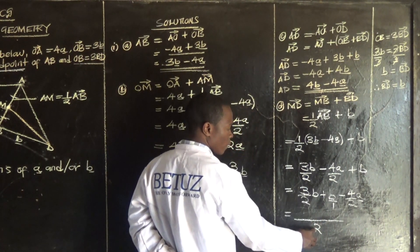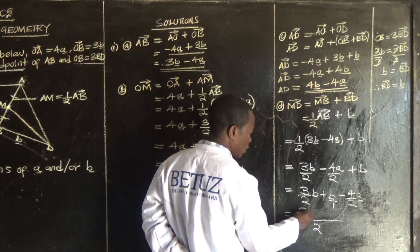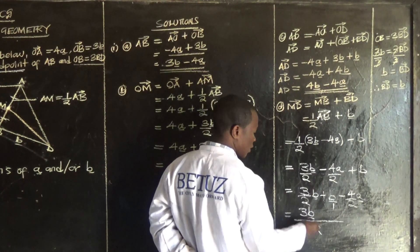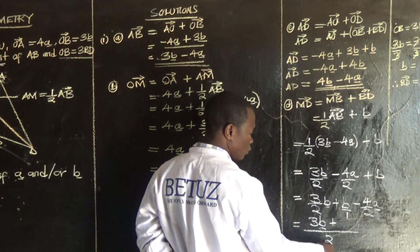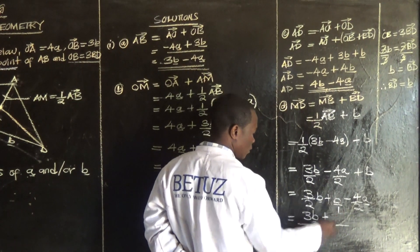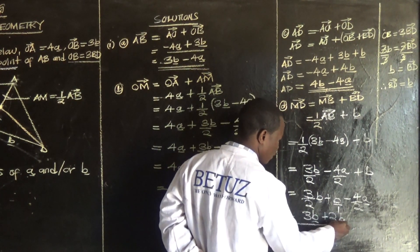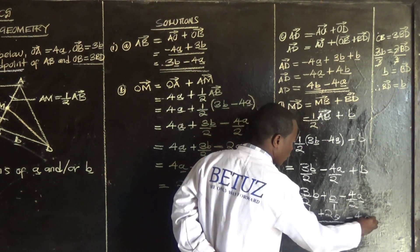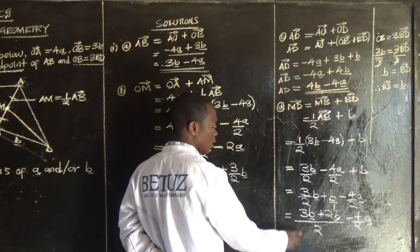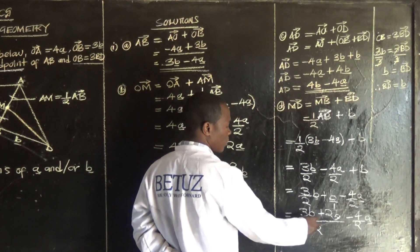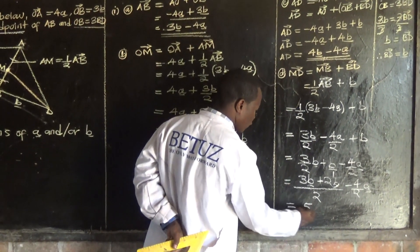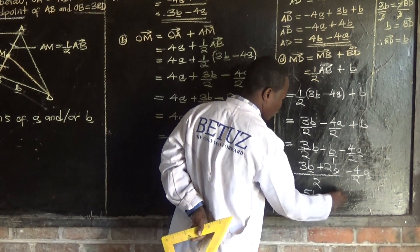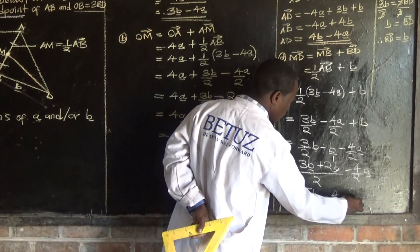Expanding: 3 vector b over 2 minus 4 vector a over 2, plus vector b. Finding the lowest common denominator, which is 2: that gives 3 vector b over 2 plus 2 vector b over 2, minus 4 vector a over 2.